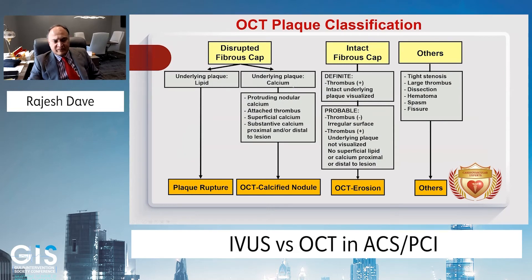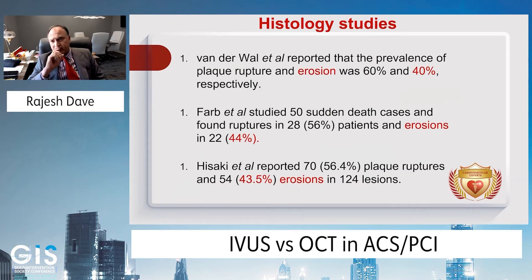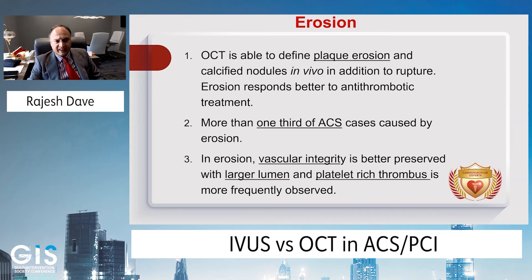OCT-based plaque classification is divided into two parts: either you have a ruptured or disrupted fibrous cap, or you don't. If you have a disrupted fibrous cap, then you have either plaque rupture or calcified nodule. If you have an intact fibrous cap, it's going to be erosion. There are many histological studies supporting this data, including a study by Farb et al. which studied 57 death cases and found rupture in 56% and erosion in 44% of patients.